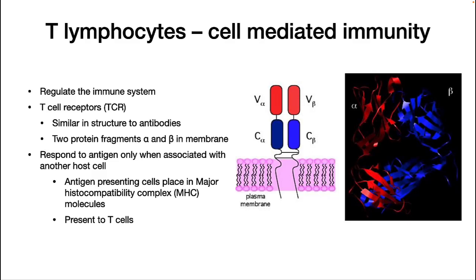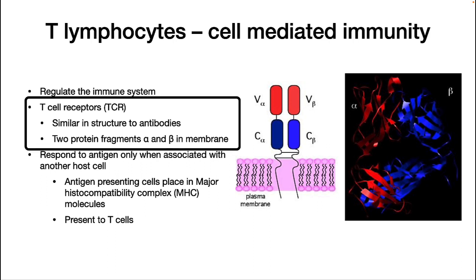In this video, we focus on the other half of the adaptive immune response: T lymphocytes, which I will call T cells most of the time. These cells have two major roles. First, some of them regulate the immune system. The other half manage host cells that have become infected. All of them respond to antigens using a T cell receptor.